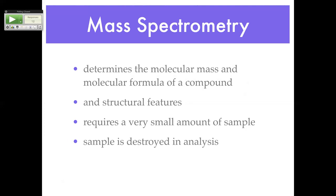That's why they want to use a very small amount — because mass spec actually breaks the sample up. You could technically get your sample back from the IR, and from the NMR you can pour it back out of the tube and use it. But in mass spec, you can't do that.